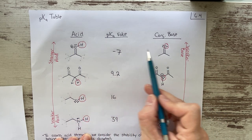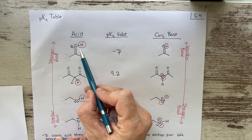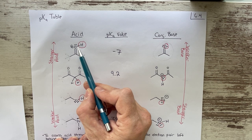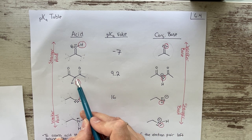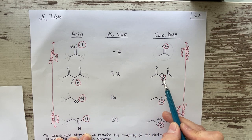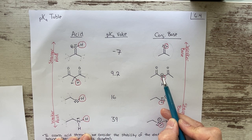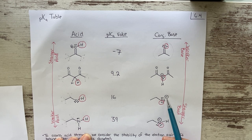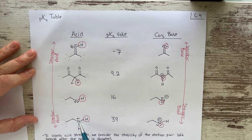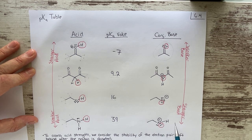Once the proton is pulled from the alcohol, the sigma electrons in the O-H bond stay with oxygen and become a new non-bonding pair — that's the conjugate base. For the ketone carbon-hydrogen bond, those sigma electrons stay with carbon and become a new lone pair, giving the conjugate base a formal negative charge. For the amine, the N-H sigma electrons stay with nitrogen after deprotonation, becoming a new non-bonding pair, and nitrogen adopts a formal negative charge.